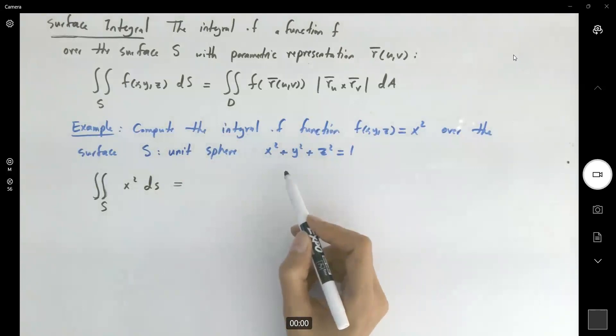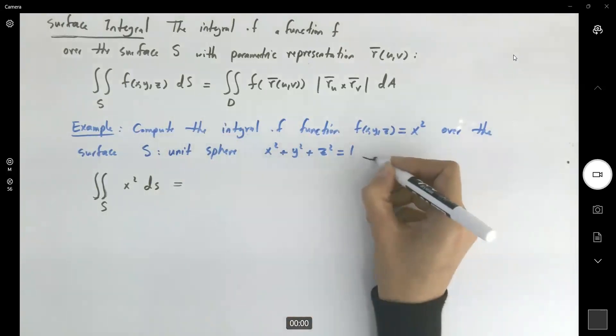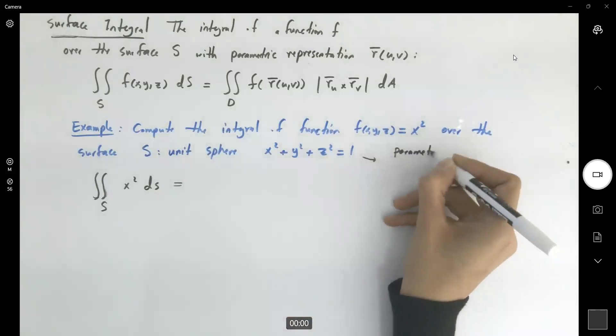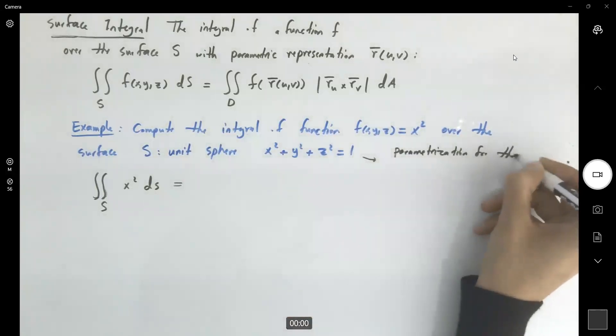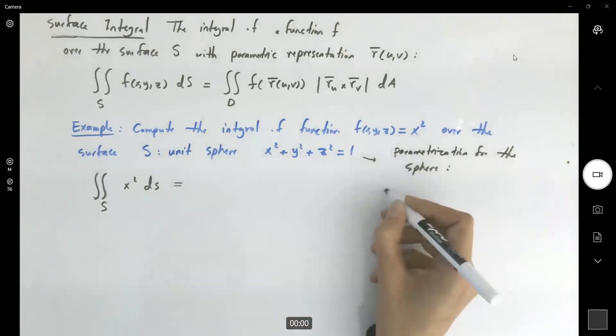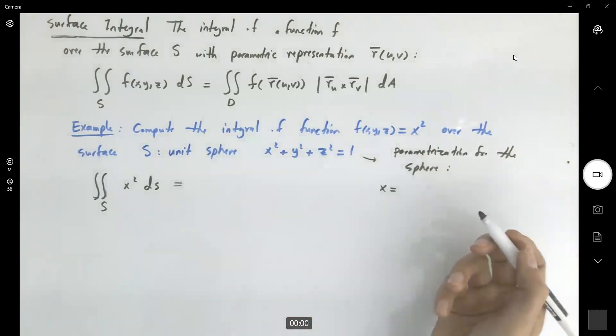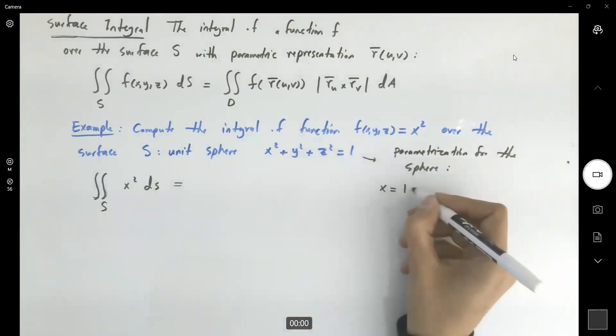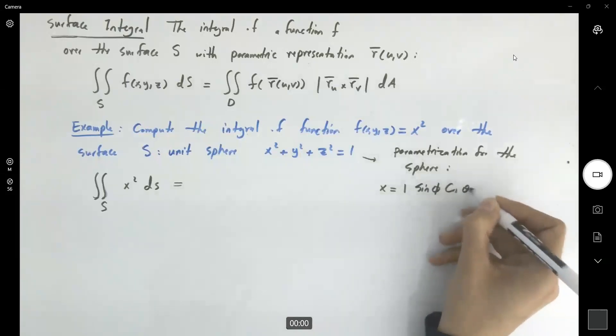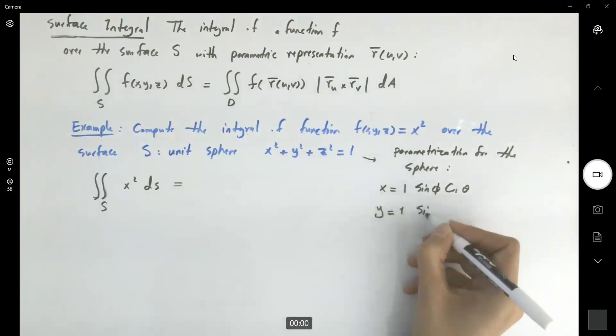Remember that the parametrization for this sphere: x was ρ, but the ρ is just 1 here. You have a unit circle, so x = sin φ cos θ, y = sin φ sin θ, and z = cos φ.